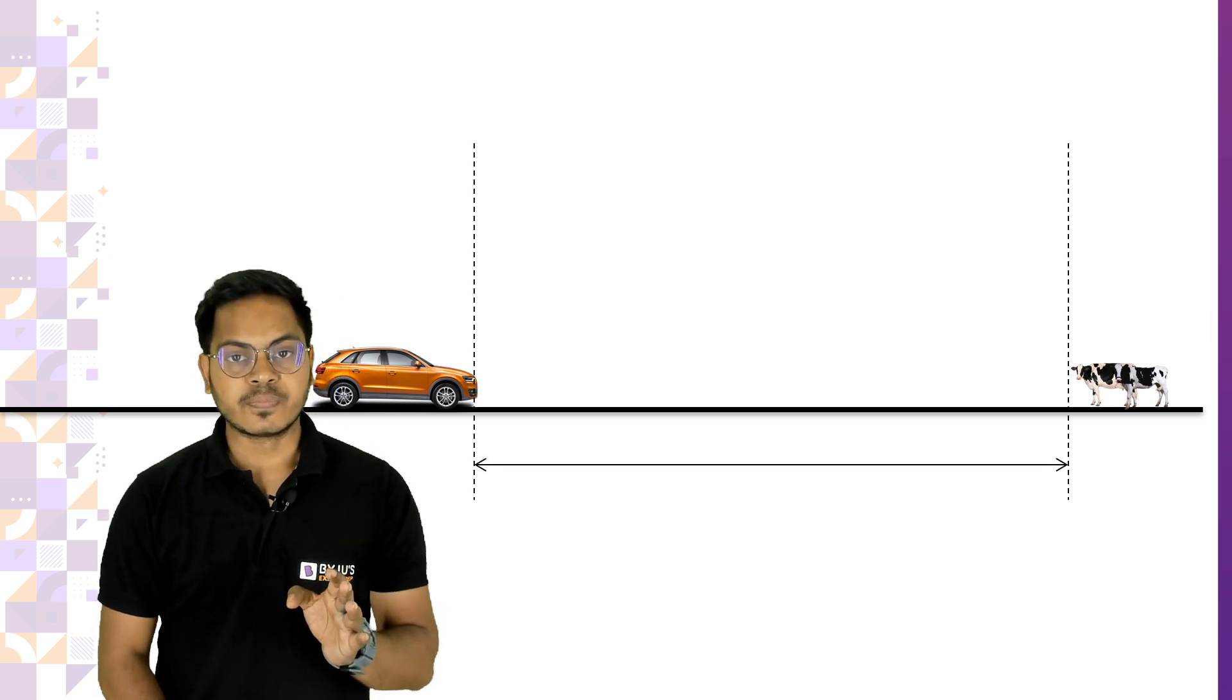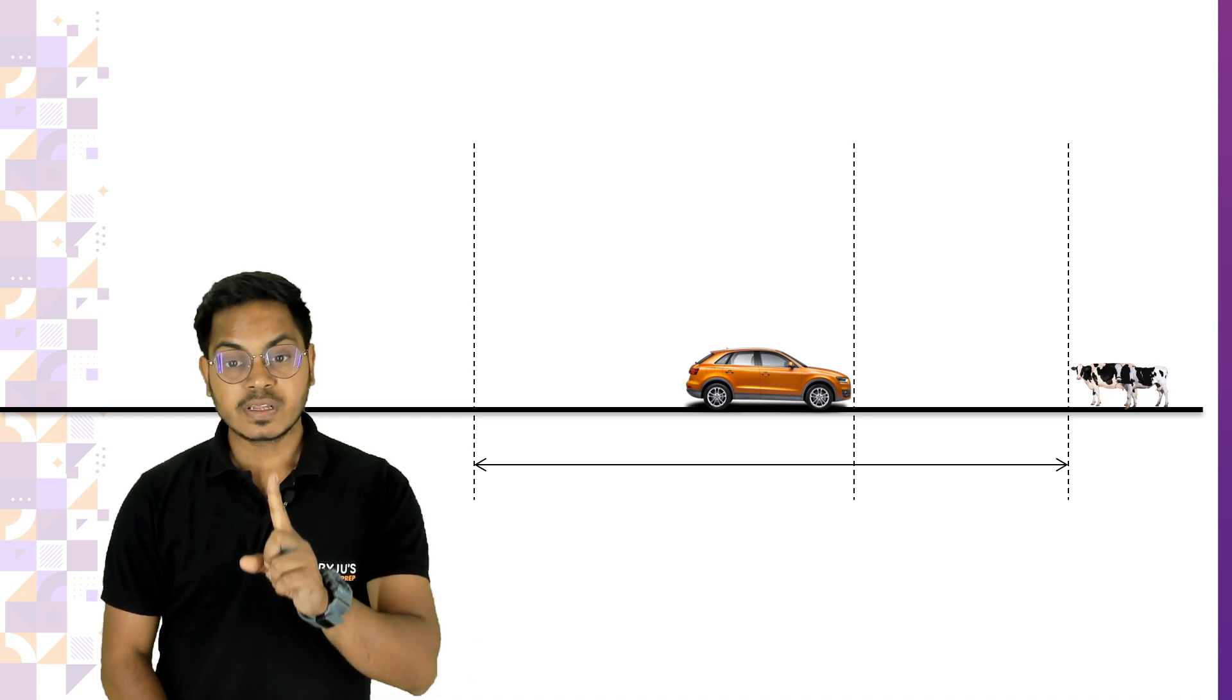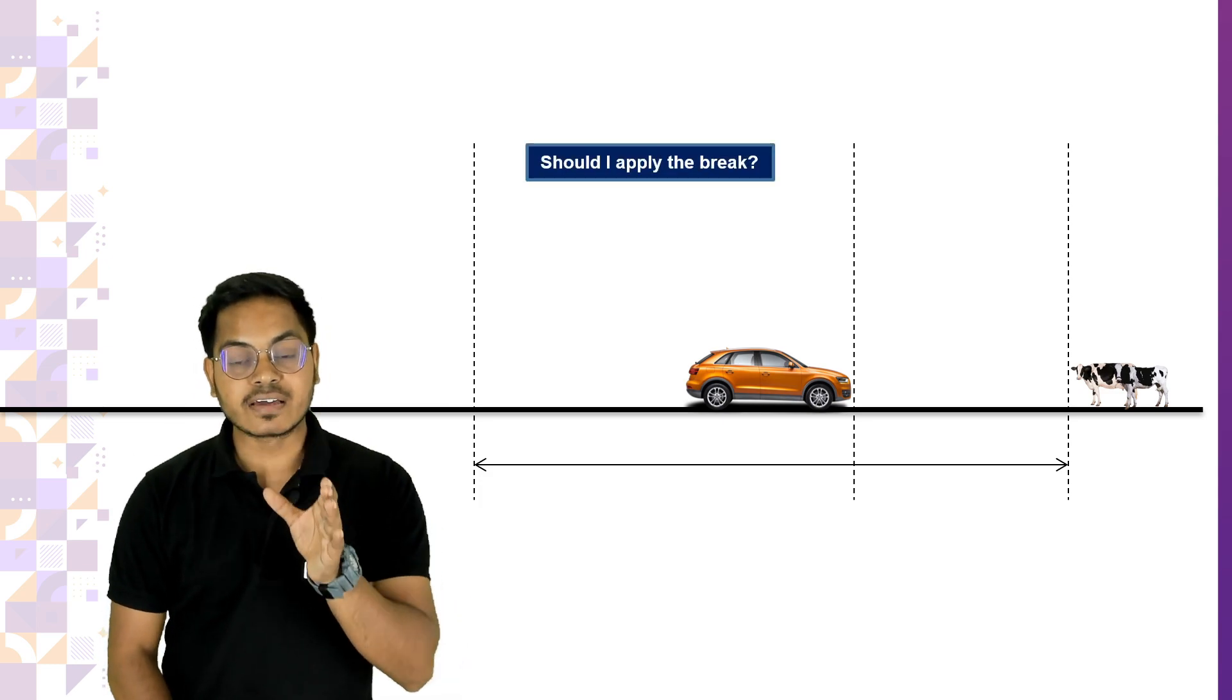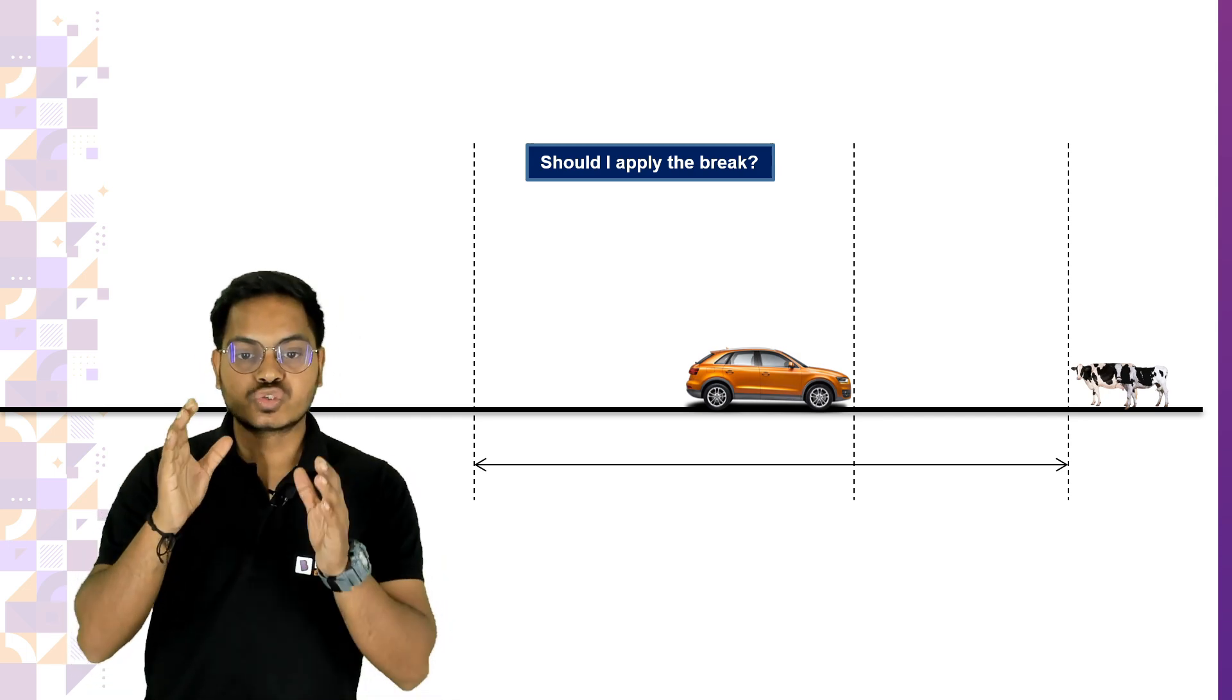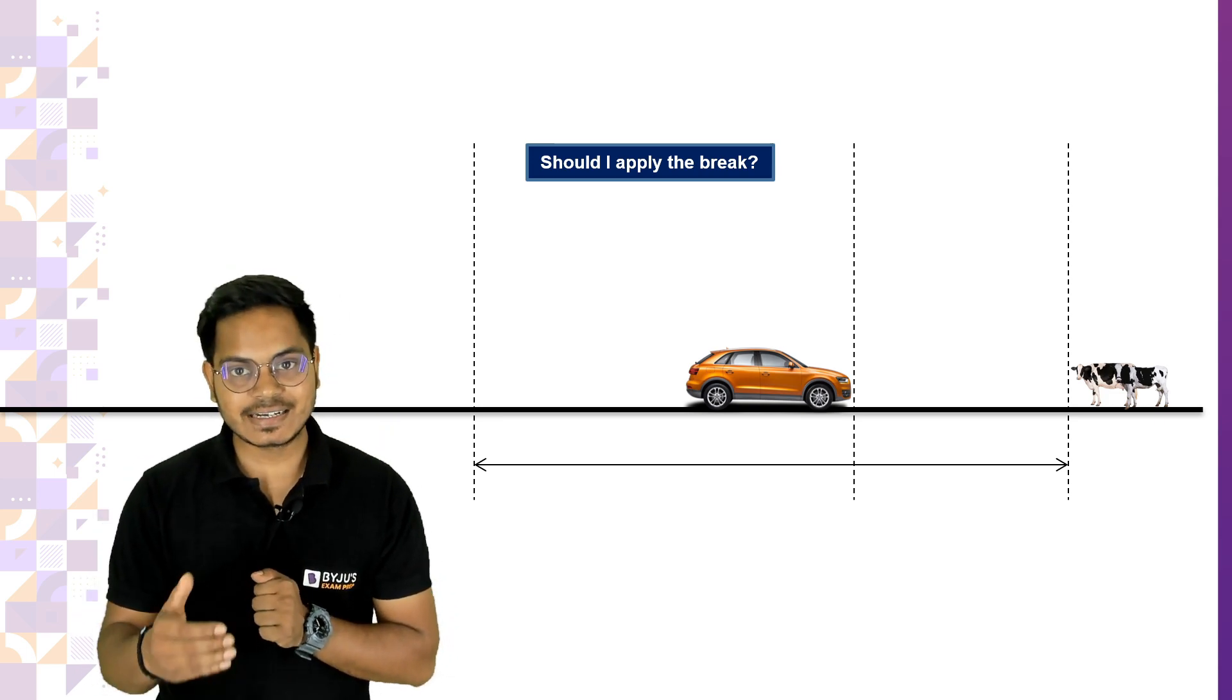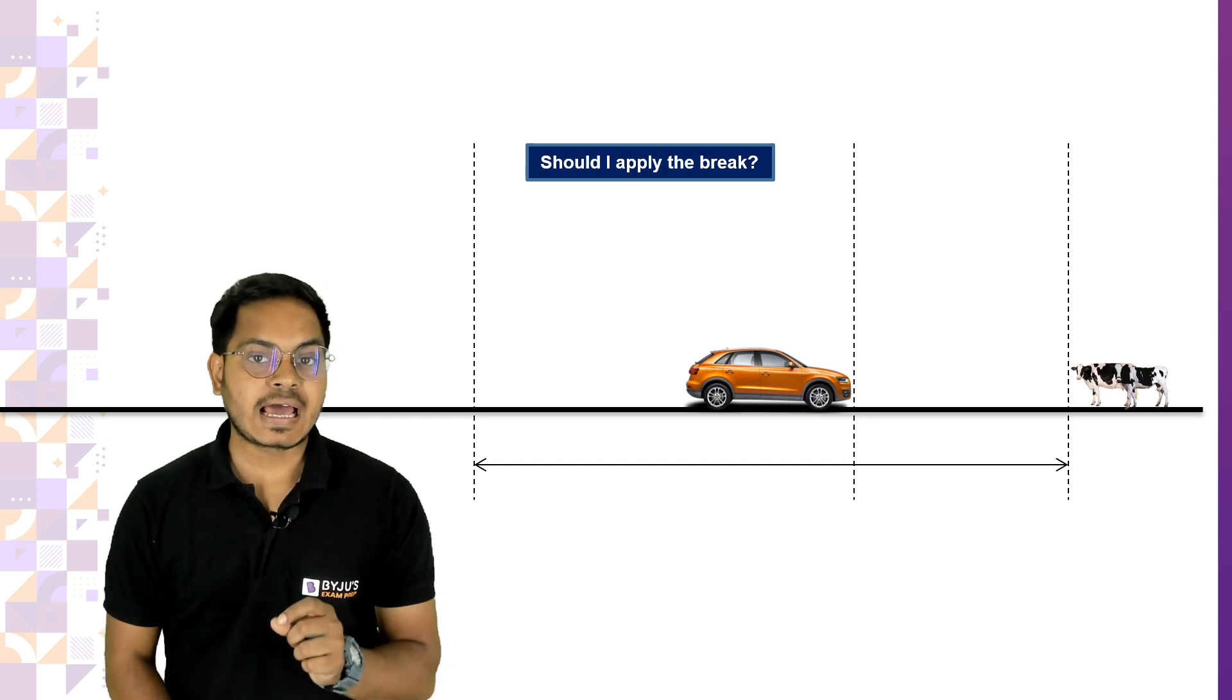As soon as the vehicle will see the object, the driver will cover a certain distance. During this distance the driver is deciding whether to apply the brake or not, the driver is reacting. The distance covered by the driver while he or she is reacting, while making a decision should I apply the brake, that distance is called lag distance.